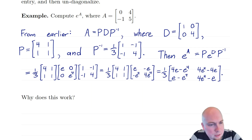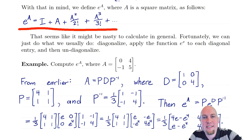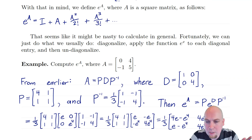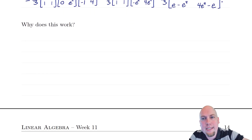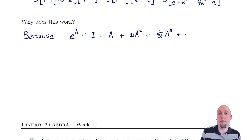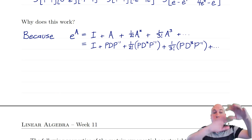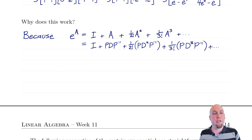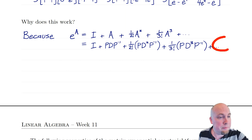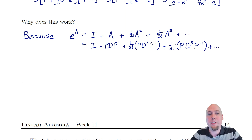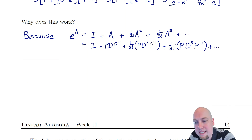Why does this work? Why does this matrix equal the ugly infinite sum that we said was the definition of e to the power A? The reason is because diagonalization works so well with powers. If we start with the definition of e to the power A as that infinite sum and replace all the A's by the diagonalization — replace A by PDP inverse, A squared by PDP inverse squared, and bring the square into the D piece in the middle — then A cubed is PD cubed P inverse, A to the fourth is PD to the fourth P inverse, and so on. Every single term can be replaced by a diagonalization where you just apply the power to the diagonal piece in the middle.